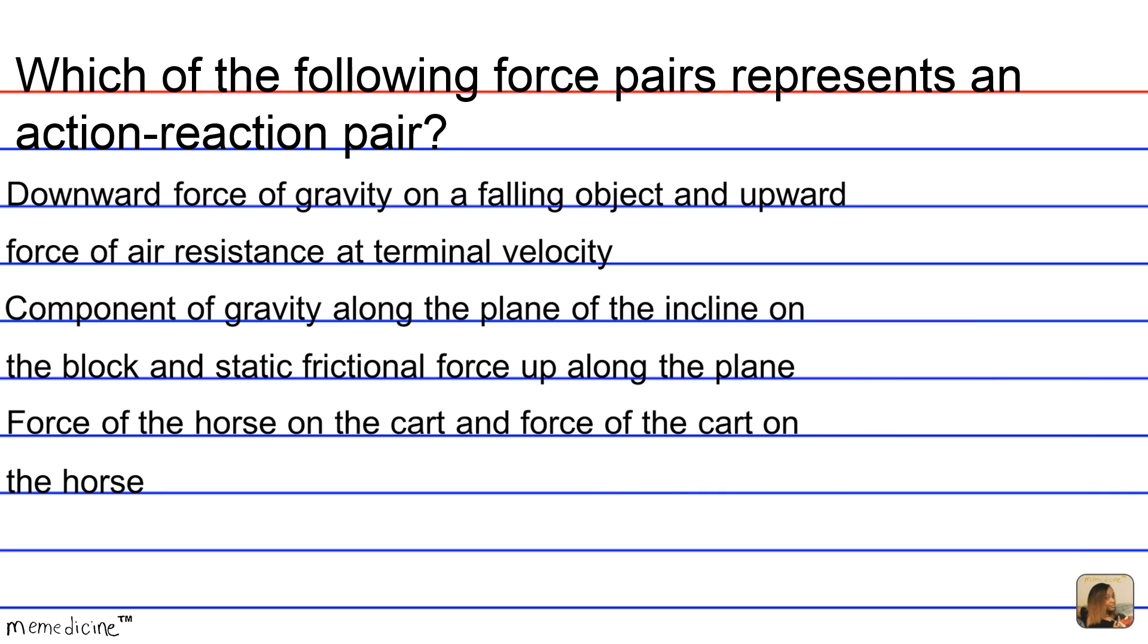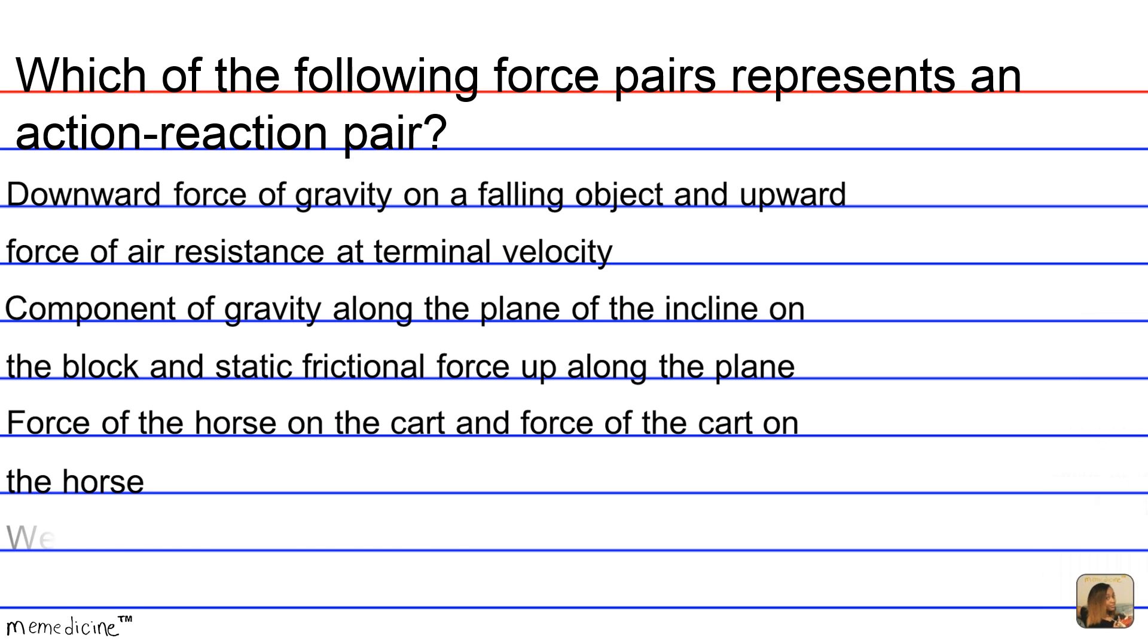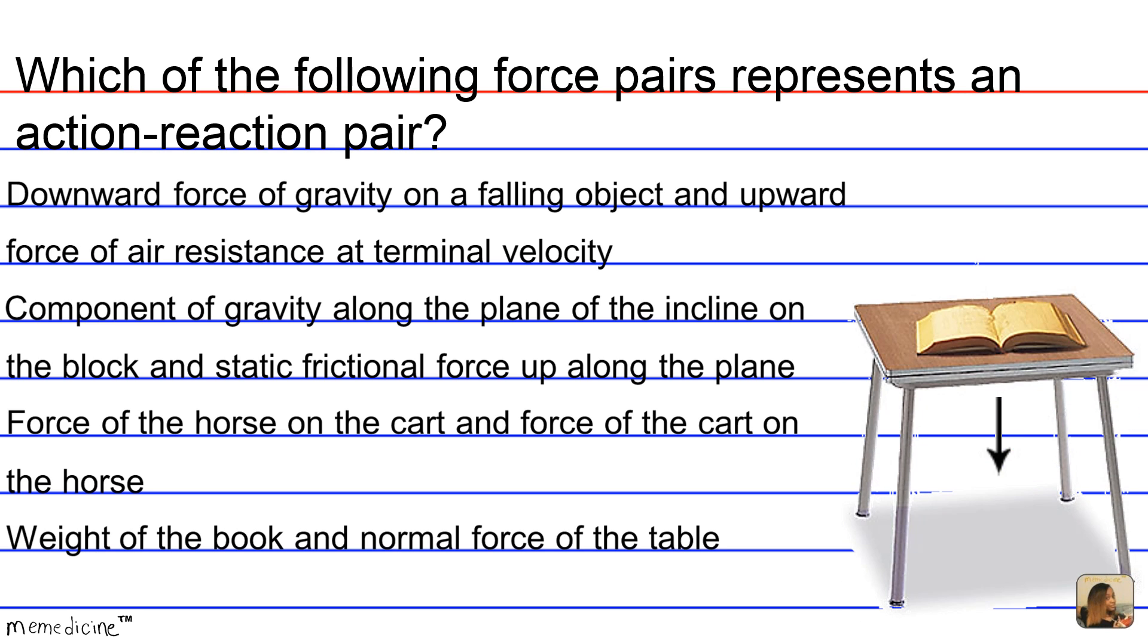Is it C, the force of the horse on the cart and the force of the cart on the horse? Or is it D, the weight of the book and the normal force from the table?